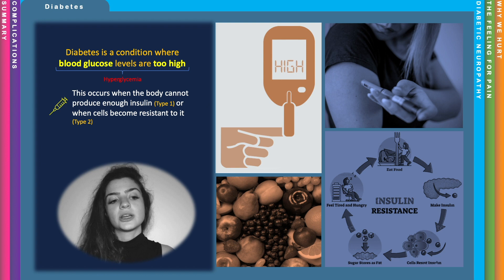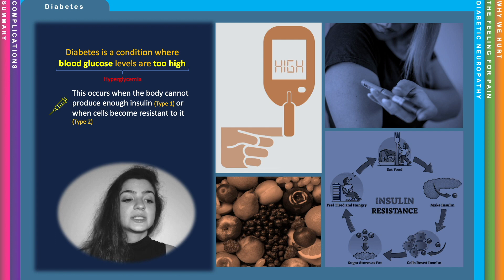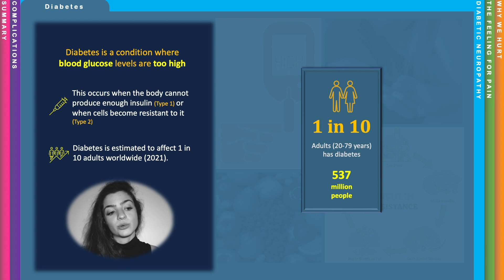Diabetes is a condition where blood glucose levels are too high. This can be because the body cannot produce enough insulin in type 1 cases, or the cells become resistant to insulin, which is type 2 diabetes.